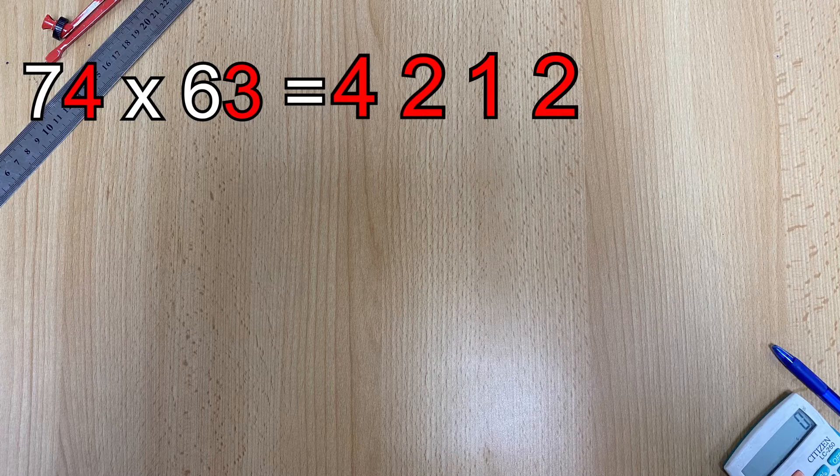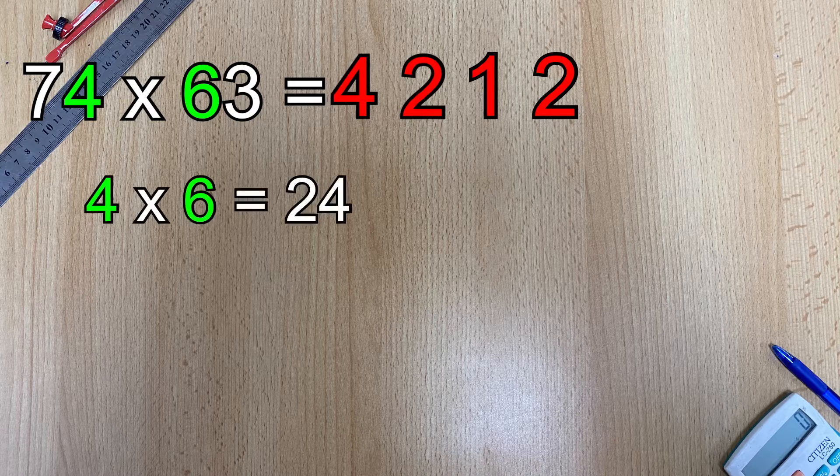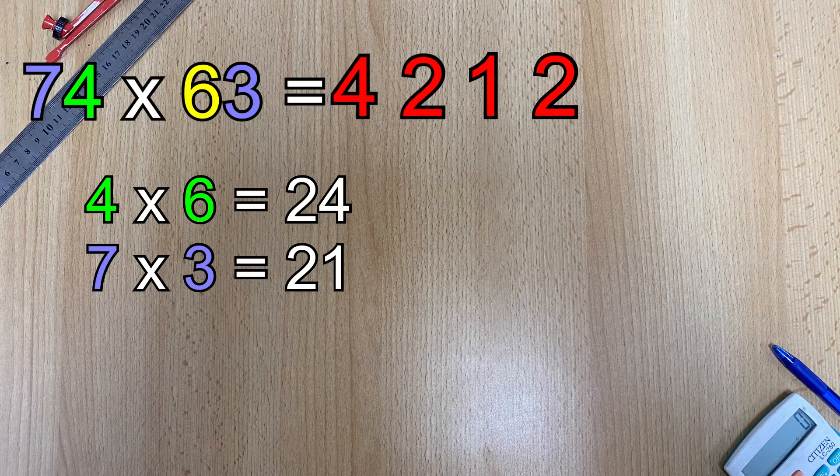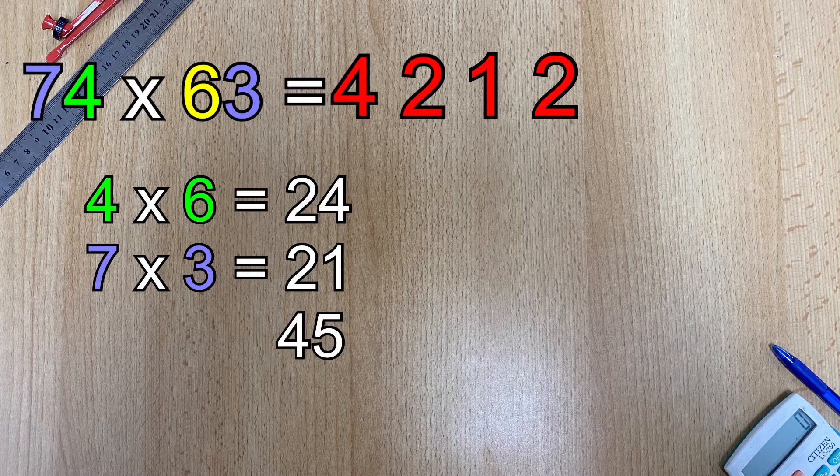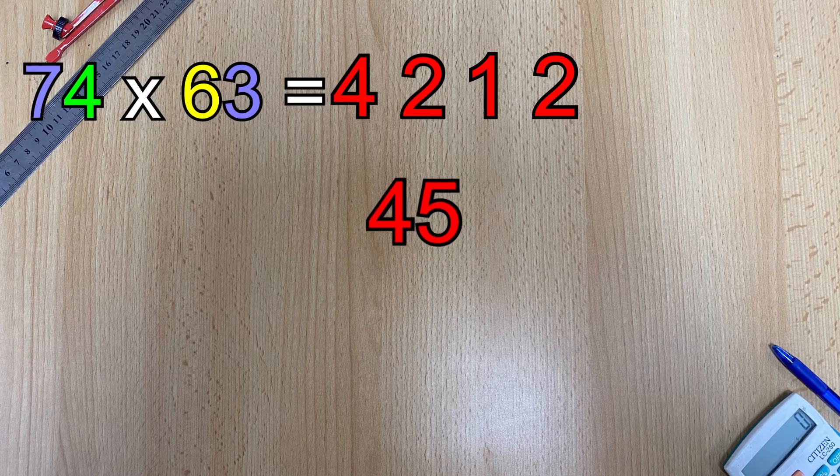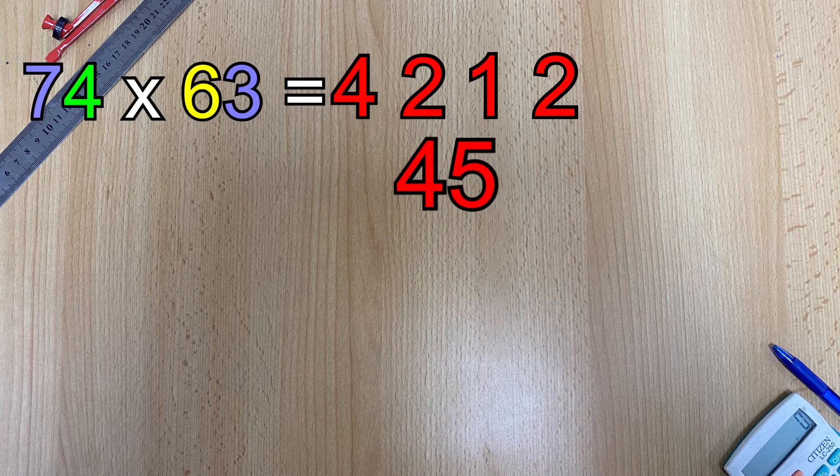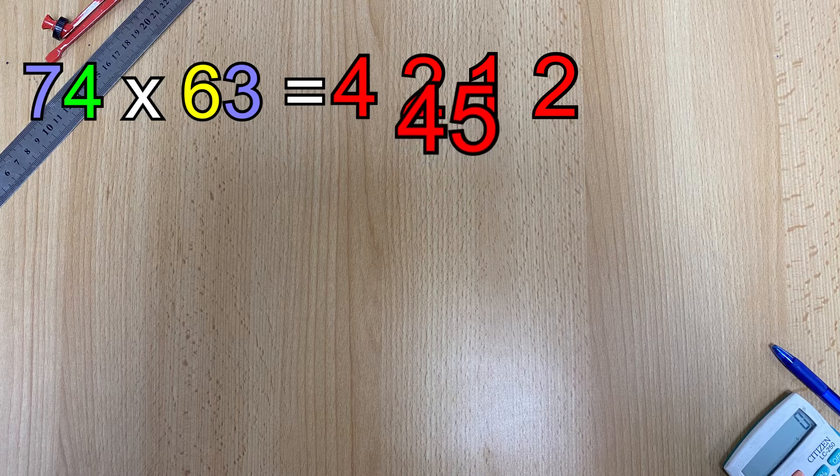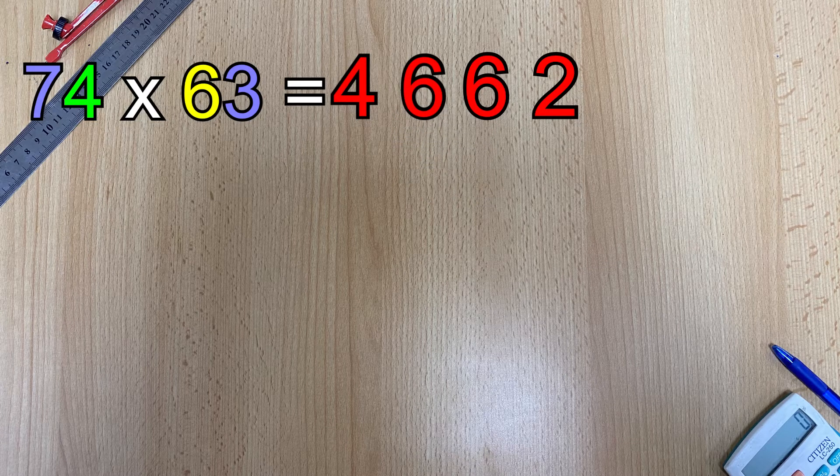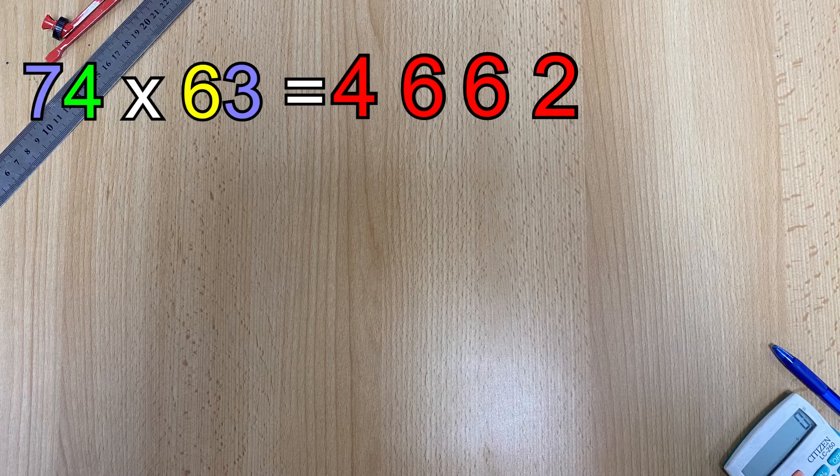So when that happens here's what we do: 4 times 6 equals 24, 7 times 3 equals 21. The total of those two is 45 and watch what happens to 45 now. You take the two digits over into the middle and then they add on to the two digits in the middle to make 66 and a total of 4,662.